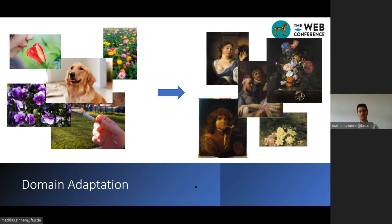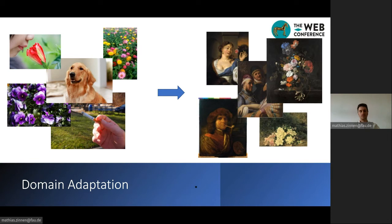One problem we have to solve with all these methods is the domain adaptation problem, because object detection and pose estimation methods are usually trained on large datasets of photos, but we are applying them on artworks. Somehow we have to transfer the knowledge these models learned in the photographic domain to the artistic domain. There are many different techniques for that, and we will try to apply, combine, and modify them — thus pushing the state of the art in computer vision, especially in the context of cultural heritage, where domain adaptation is a common problem.